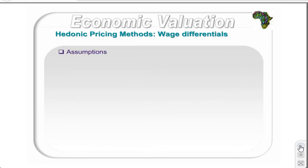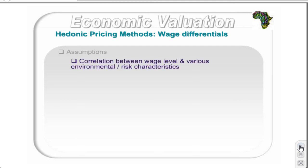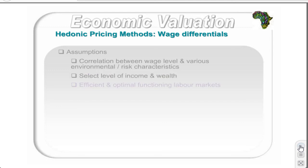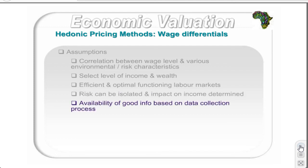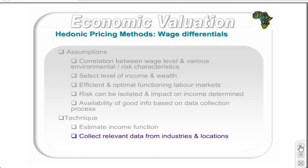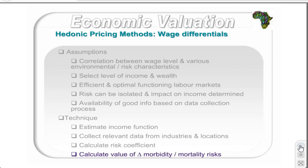The application to wage differentials rests on assumptions that there is a good correlation between wage level and various environmental risk characteristics; that individuals have a choice of different income and wealth levels and are free to move between industries; that there are efficient and optimal functioning labor markets; that it is possible to isolate risk and determine its impact on income; and that good information is available based on the data collection process. The technique consists of estimating an income function with various job-related characteristics, socio-economic characteristics, and mortality or morbidity risk as explanatory variables. The relevant data is collected from industries and locations, used to calculate a risk coefficient with statistical techniques, and then the value of a change in mortality or morbidity risk is calculated.